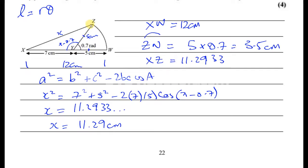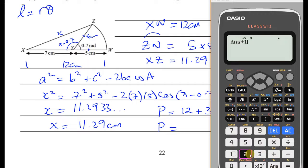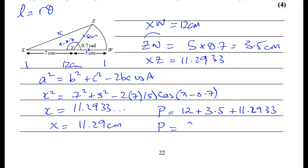The perimeter we need is 11.2933 + 3.5 + 12. So 12 + 3.5 + 11.2933. It should be more than two decimal places because you have to round it at the end to two decimal places. Our total perimeter is 12 + 3.5 + 11.2933, which gives us 26.7933.